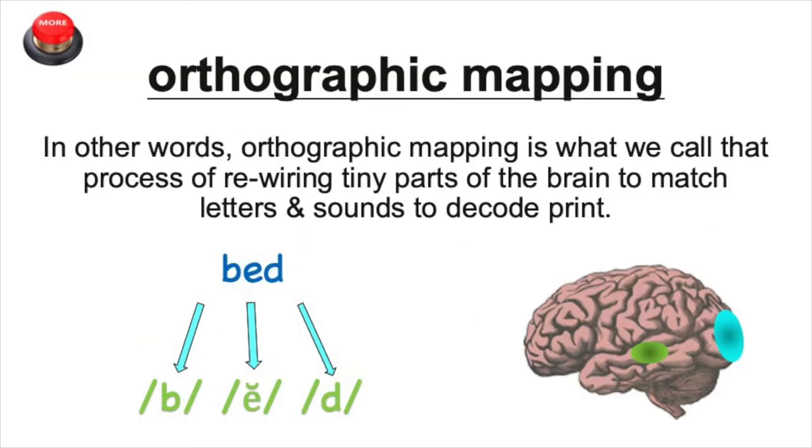So in other words, orthographic mapping is what we call that process of rewiring tiny parts of the brain to match letters and sounds and decode print.